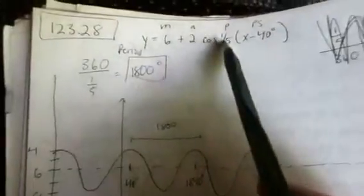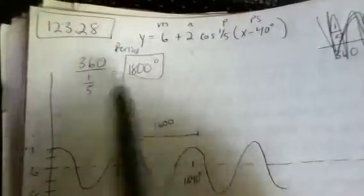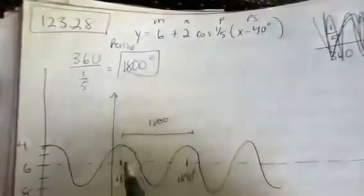The period can be found by going 360 divided by 1 fifth, which turns out to be 1800, and the phase shift is 40 degrees to the right.